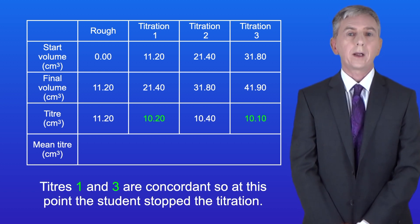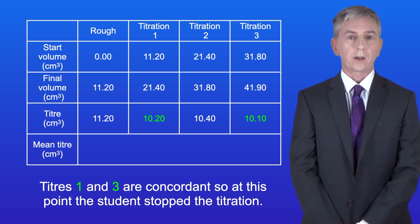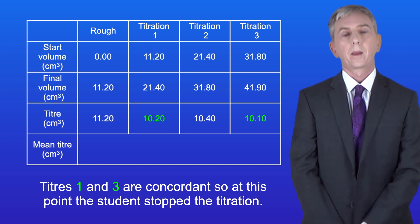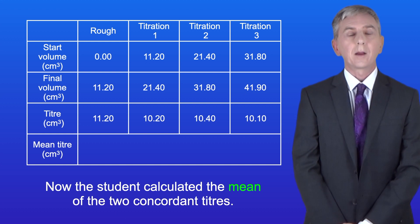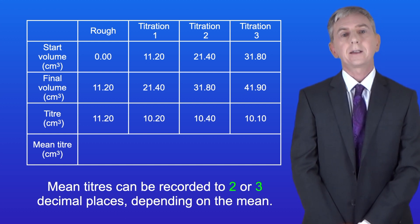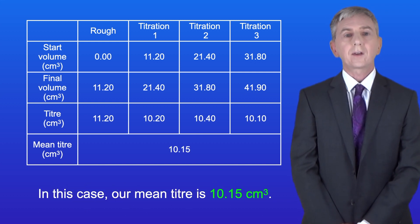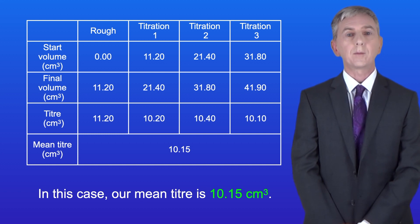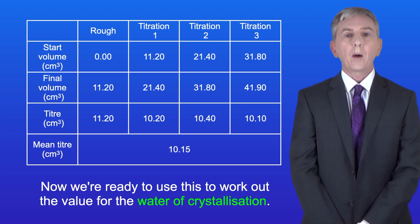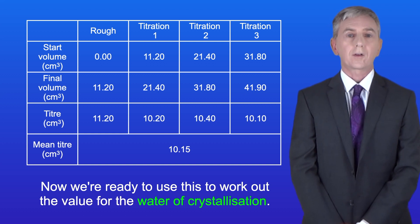Titers 1 and 3 are concordant, so at this point the student stopped the titration. The student then calculated the mean of the two concordant titers. Mean titers can be recorded to two or three decimal places depending on the mean. In this case our mean titer is 10.15 centimeters cubed. Now we're ready to use this to work out the value for the water of crystallization.